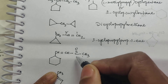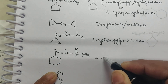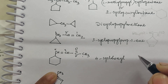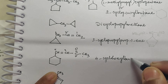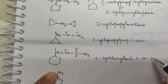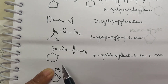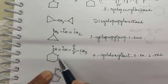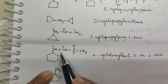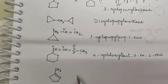This next compound: numbering 1-2-3-4, at the fourth position there is a cyclohexyl group, and between 3 and 4 there is a double bond, and at position 2 there is a ketone group. So you call it 4-cyclohexylbut-3-en-2-one.